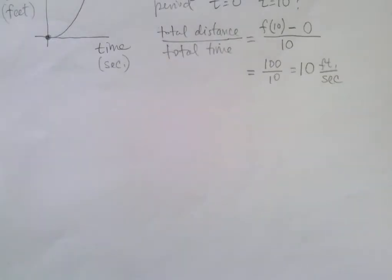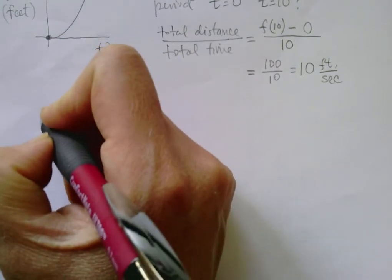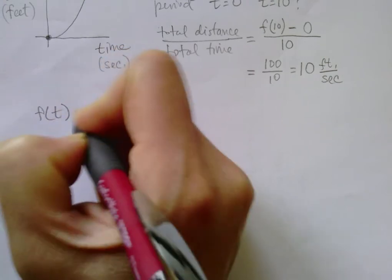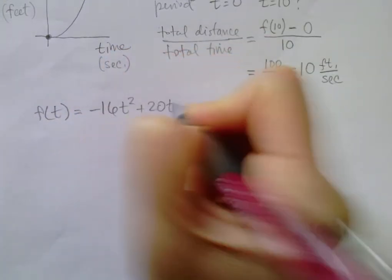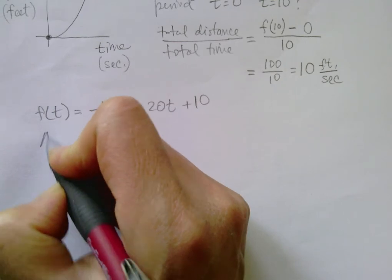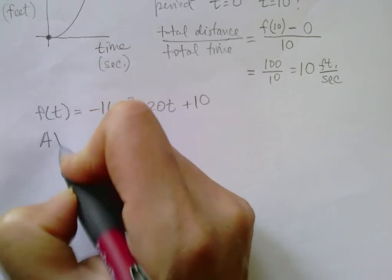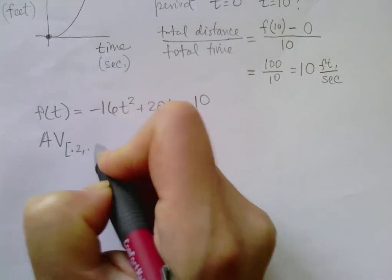Now let's make this example a little bit more interesting. Let's say your distance was given by the following equation. So what's the average velocity, and I'm going to denote it this way, from 0.2 to say 0.5?